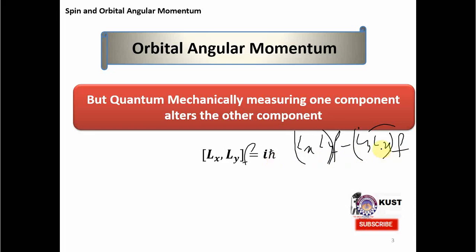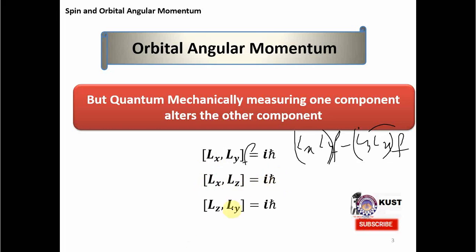This is called uncertainty: when I measure LX first, it changes the state, so measuring LY second is not equal to measuring LY first and then LX second. This uncertainty in the measurement of angular momentum components is due to the uncertainty principle in quantum mechanics. This applies not only between LX and LY, but also between LX and LZ, and between LZ and LY — all three components of angular momentum cannot be specified simultaneously with 100% accuracy.